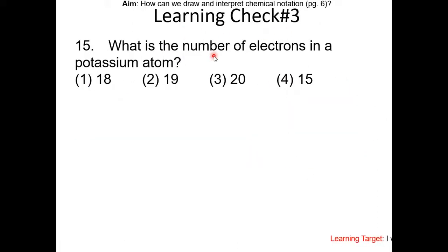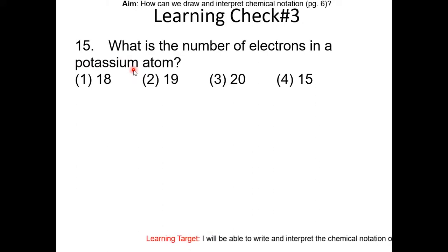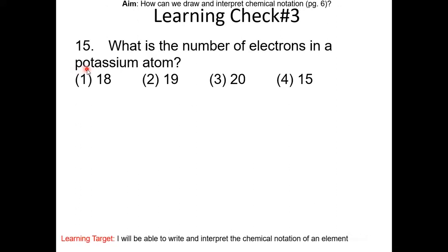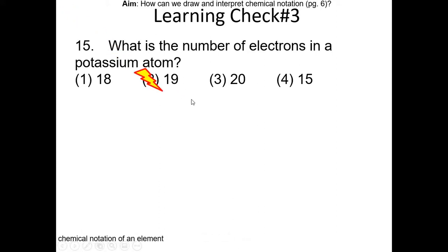Learning check number 3: what is the number of electrons in a potassium atom? Pause the video and try to do this yourself. First, look up the symbol of potassium — it is not P, it is actually K. Check table S, and don't be lazy because you may get it wrong. Next, look up the atomic number of potassium, which is 19. Then look up the electron configuration and add up all the electrons — it adds up to 19. This makes sense because the atom is neutral, so you expect the electrons to equal the protons.